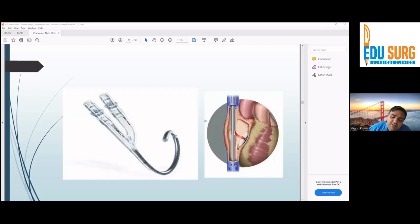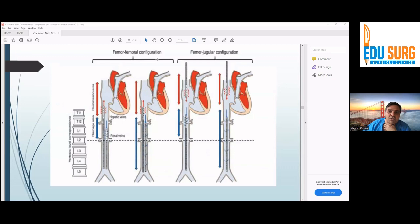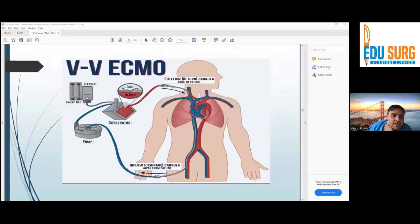This is the Avalon cannula. Here, this is the access. This is the return. And this is the oxygenated blood coming here. This is the femfem configuration. This is the femjugular configuration. You can see, this is the drainage cannula, which is just above the renal veins. And this is the return cannula, which is going up to the atrial-caval junction so that we can return the oxygenated blood near the tricuspid wall and it goes back to the pulmonary artery. This is the basic configuration of femjugular. We are taking blood from the inferior vena cava. It's passing through the pump, then through the oxygenator. Here, there is a sweep gas where we control the oxygenation and carbon dioxide.